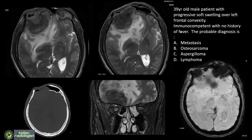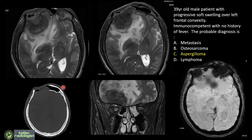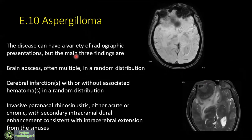A young immunocompetent person has developed progressive soft swelling over the left frontal convexity. The diagnosis options are metastasis, osteosarcoma, aspergilloma, or lymphoma. 41% chose aspergilloma, which is correct. On CT there is complete bone erosion. The mass lesion was hypointense on T2 and FLAIR images; on SWI there were areas of blooming corresponding to fungal hyphae and byproducts. Aspergilloma can cause slow-growing cautious bone erosions, vascular involvement, and cerebral infarction.